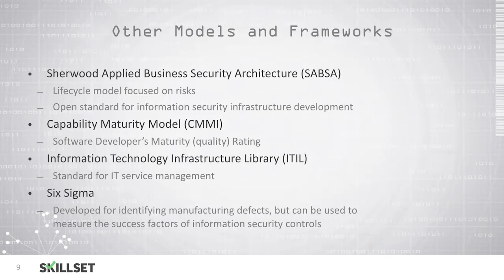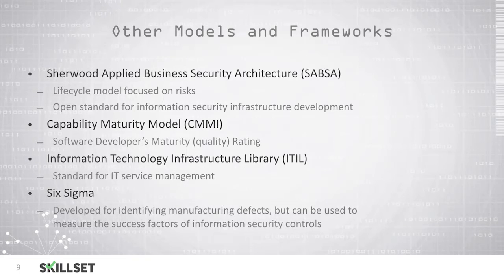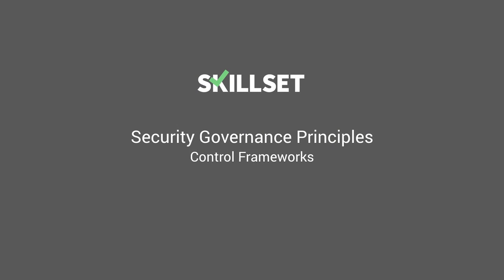There are some additional frameworks that are often used in information security. The SABSA model, or the Sherwood Applied Business Security Architecture, is a life cycle model which focuses on risks, and this is an open standard for information security infrastructure development. The Capability Maturity Model, or CMMI, is designed for software developers and provides maturity or quality ratings for different pieces of software. The ITIL, or Information Technology Infrastructure Library, is generally used for IT service management. And the Six Sigma model was developed for identifying manufacturing defects, but it can also be used to test the success of information security controls. This concludes the module. Thank you for watching.